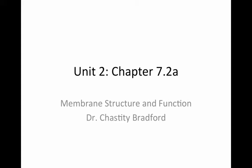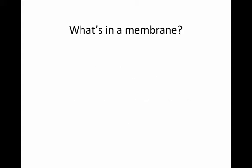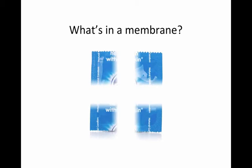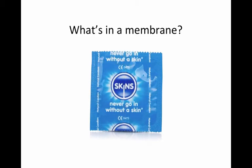Membrane structure results in selective permeability. What is a membrane? Condoms can be considered membranes. They form selective barriers, which means they allow certain things to get through, but most of all, they're used because they prevent viruses from entering.